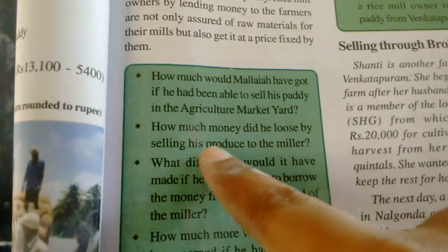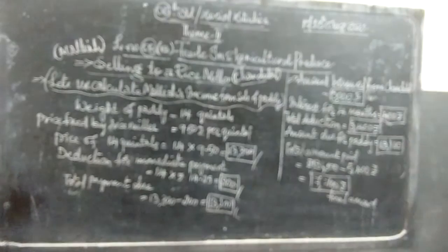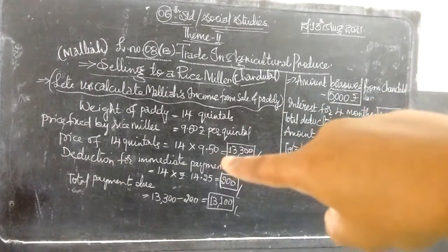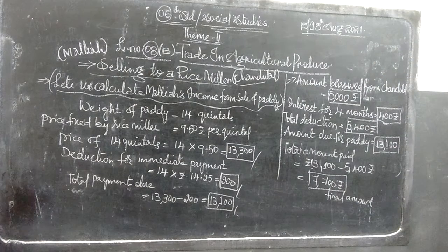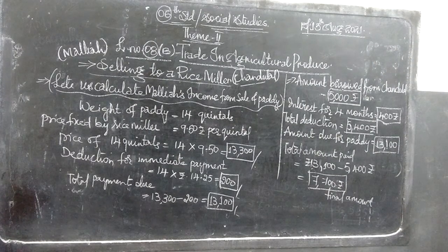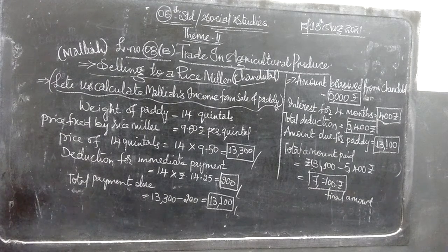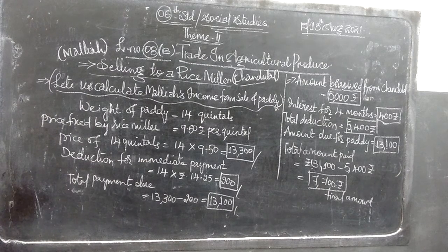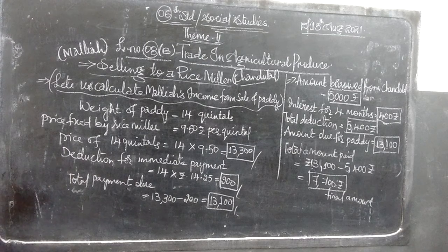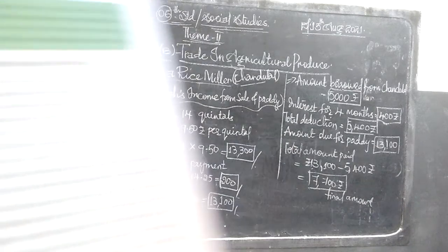The next question: how much money did he lose by selling his produce to the miller? The rice miller fixed the price at Rs. 950, while the agricultural market MSP was Rs. 1,050 to Rs. 1,080. So Malaya lost roughly Rs. 100 to Rs. 150 per quintal by selling to the rice miller.